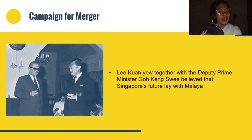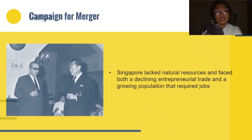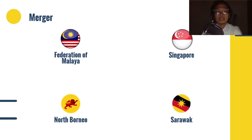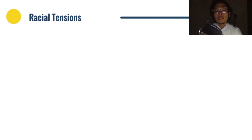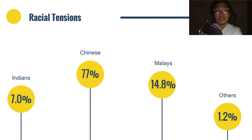Singapore lacked natural resources and faced both a declining entrepreneurial trade and a growing population that required jobs. It was thought that a merger between the two nations would benefit the economy by creating a common market, eliminating trade tariffs, and supporting new industries to solve the ongoing unemployment problem. On September 16, 1963, Malaya, Singapore, North Borneo, and Sarawak were merged and Malaysia was formed. However, racial tensions increased as ethnic Chinese and other non-Malay groups in Singapore rejected discriminatory policies imposed by Malay leaders, such as quotas and special privileges guaranteed under Article 153 of the Constitution of Malaysia.